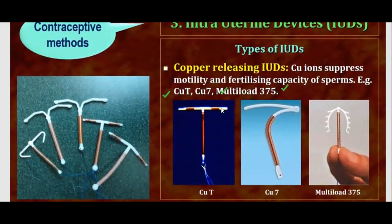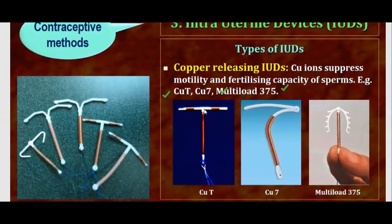CUT looks like a T-shape, that's why it is named CUT. CU7 looks like a 7-shape. Multiload 375 is another copper-releasing device. These copper devices release copper ions into the body over time. The copper acts as a foreign substance, which enhances our immune system response. The immune system kills the copper ions and also kills the sperms along with them.